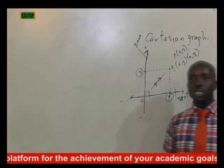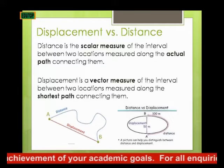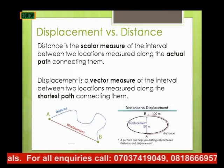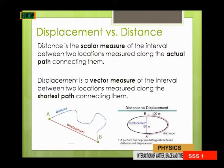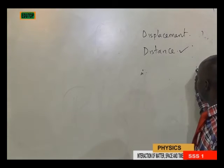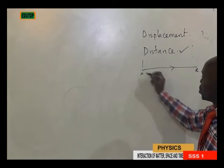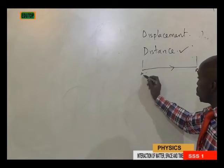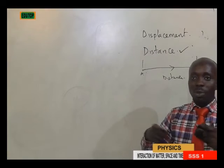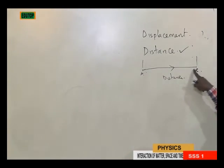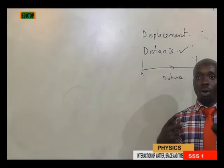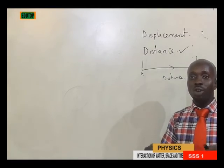Let's go to displacement and distance. What is distance, and what is displacement? Distance is a scalar measure of the interval between two locations, measured along the actual path connecting them. The interval between point A and point B along the actual path connecting them is what we call distance.